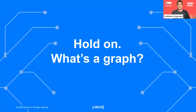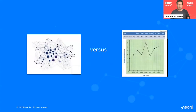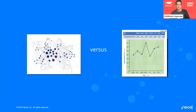Let's get into what a graph is. I'm sure there will be a fundamental question — if you've heard of graphs, you might wonder: is it the thing on the left, or is it the thing on the right? You can use the chat window to share your thoughts. And the answer is: what we call a graph is the thing on the left — it's a network of connected entities or connected nodes.